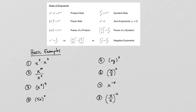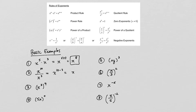Looking at our first example — the product rule — since the base is the same, x to the 5 times x to the 3 will be x to the 5 plus 3, which is x to the eighth power. Our second example is the quotient rule. Since we have a common base of x, we subtract the powers: x to the 10 minus 3 is x to the seventh.